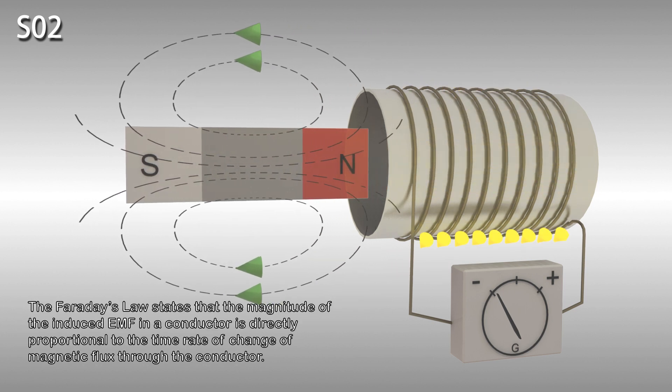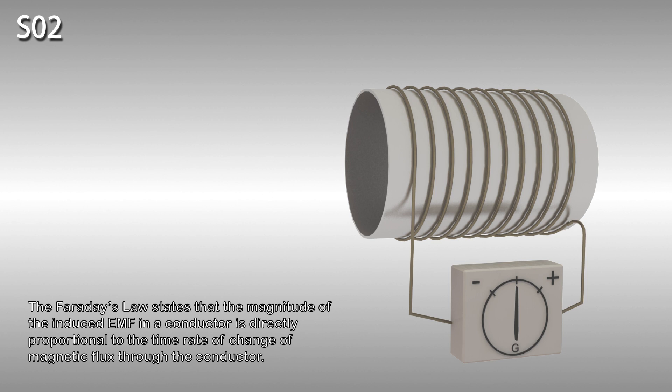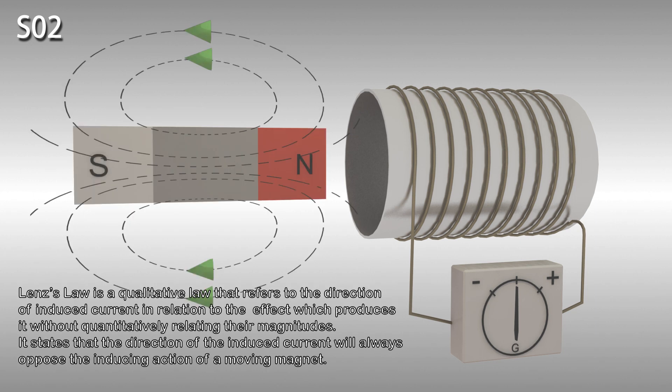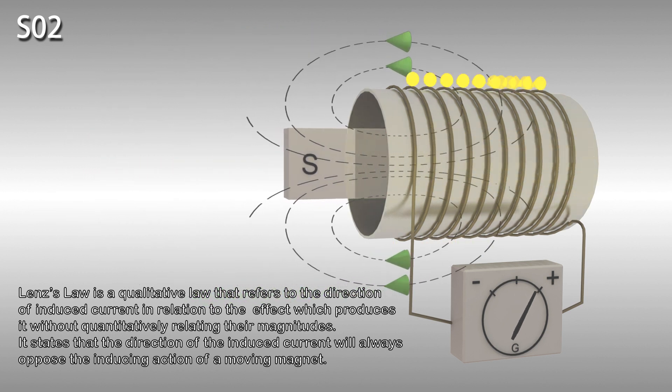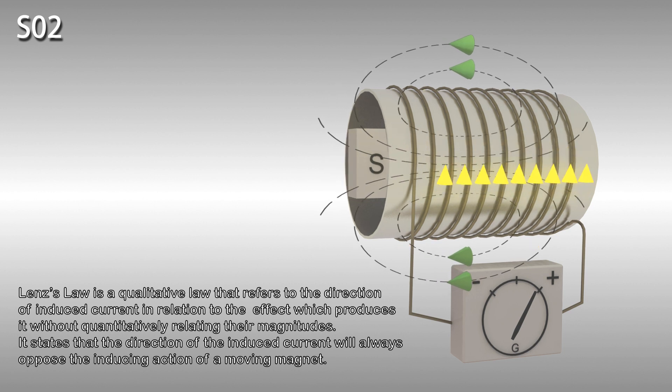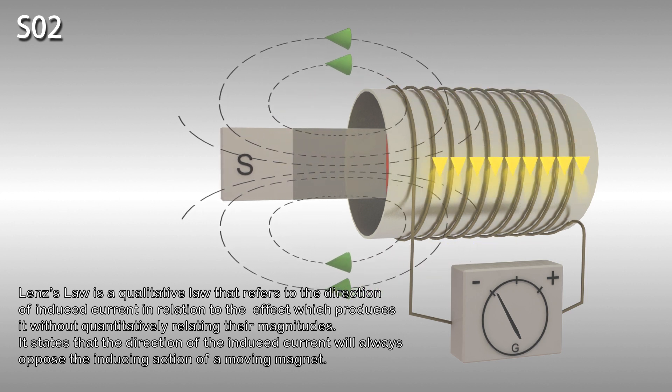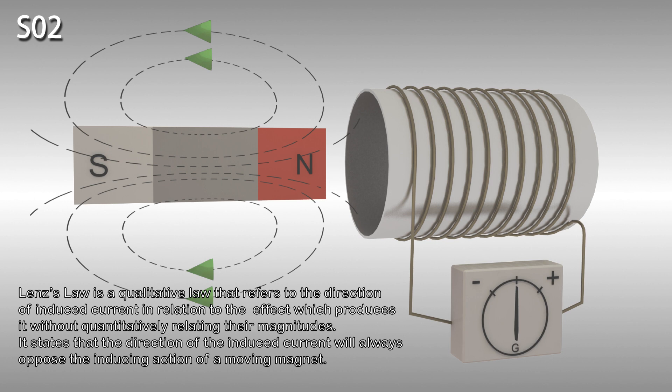Faraday's law states that the magnitude of the induced EMF in a conductor is directly proportional to the time rate of change of magnetic flux through the conductor. In other words, EMF is proportional to delta phi divided by delta T. Lenz's law is a qualitative law that refers to the direction of induced current in relation to the effect which produces it without quantitatively relating their magnitudes. It states that the direction of the induced current will always oppose the inducing action of a moving magnet.